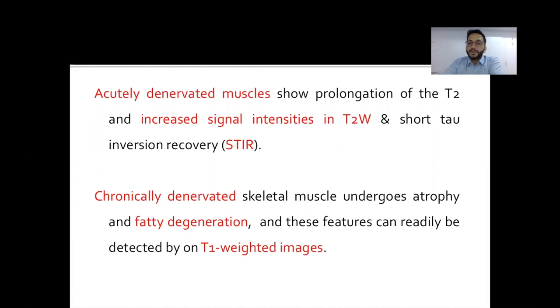So acutely denervated muscles show prolongation of T2 relaxation time. There will be increased intensity on T2 and STIR images. The muscle volume is relatively maintained. Whereas in chronically denervated skeletal muscles, there is atrophy and fatty degeneration. And these muscles show increased intensity on T1 images.